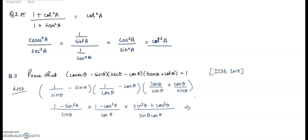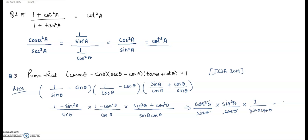Now, 1 − sin²θ = cos²θ, and 1 − cos²θ = sin²θ. So we have (cos²θ/sinθ) × (sin²θ/cosθ) × (1/(sinθcosθ)). These terms cancel — sinθ with sinθ, cosθ with cosθ — and we have proved LHS = RHS.